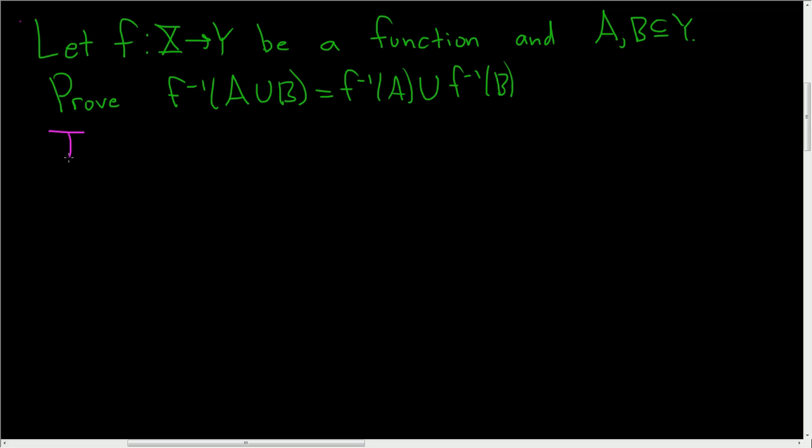Before we go into the proof, let's discuss the notation. So let's take a subset K of capital Y, and we're going to denote the inverse image of K, or the pre-image of K under F, with the following notation. And this is the set of all of the X's in capital X such that F of X is in K. So it's all of the X's that get mapped to K.